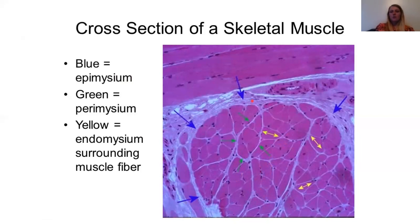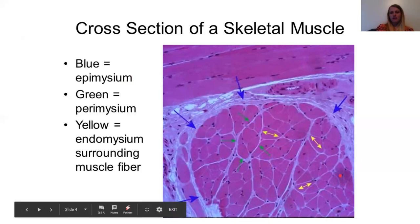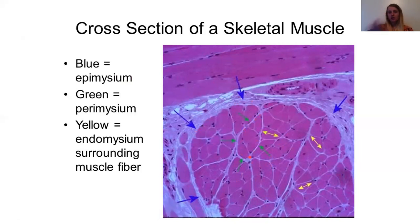So we have our epimysium that goes around everything. And then we have these little dividing lines between our bundles. That's our perimysium, that layer. And then our yellow ones, those are just the specific muscle cells, the ones that are nucleated.